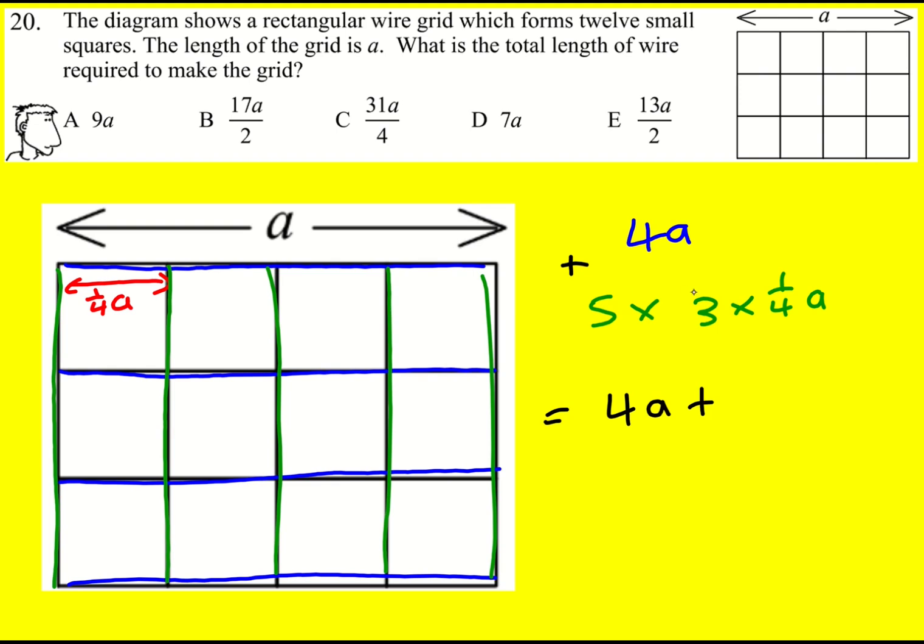So 4a plus is going to become 15 times a quarter, 15 over 4a. And 4 doesn't go into 15 so we can rule out any whole number answers and we're going to need to write it as an improper fraction.